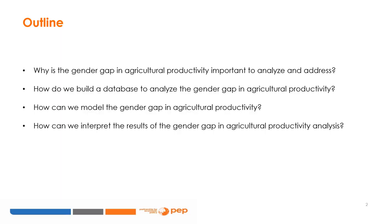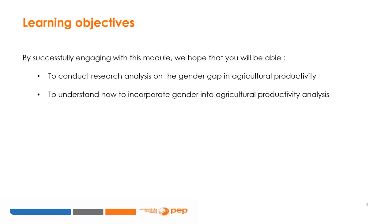Welcome to this module on the modeling of the gender gap in agricultural productivity. The aim of this module is to present an overview of: one, why the gender gap issue is important; two, how to prepare a database to analyze the gender gap in agricultural productivity; three, how to model the gender gap; and four, how to interpret the results of the gender gap in agricultural productivity analysis. By successfully engaging with this module, we hope that you'll be able to conduct research analysis on this topic.